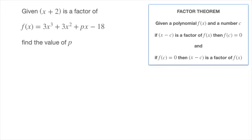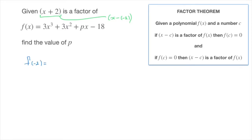If you're unsure of why it's negative 2 and not just 2, the trick is to always look at the operation between the x and the number as a subtraction. In other words, we need to think of x plus 2 as x minus negative 2. That really highlights that we're dealing with negative 2 here. So we can write f of negative 2 must equal to 0.